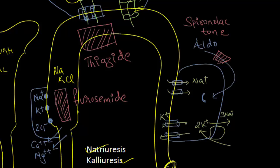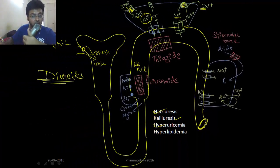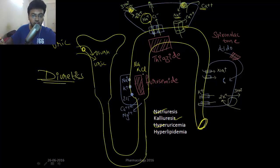If you block aldosterone with the help of spironolactone, there will be no more absorption of sodium and water and there will be no more excretion of potassium. So there will be less absorption of sodium and water, so it will cause diuresis. And if there will be no more excretion of potassium, there will be hyperkalemia in the blood. So these are potassium-sparing drugs. And all these drugs are potassium wasters because they waste the potassium.